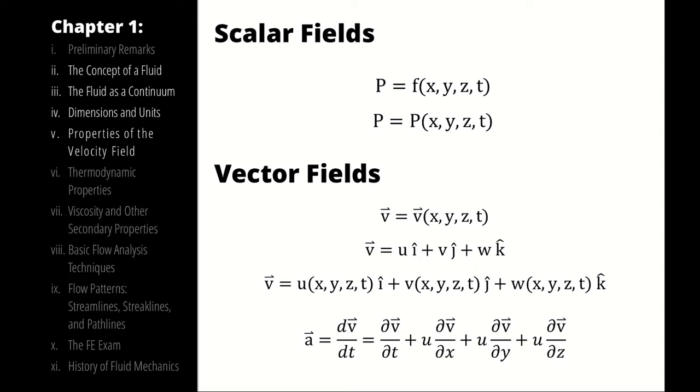While we are here, let me point out that we are using the notational scheme of u, v, and w for the x component of velocity, the y component of velocity, and the z component of velocity, respectively. We will distinguish vectors with a half arrow or full arrow notation, as opposed to scalar fields, which will have no hat.